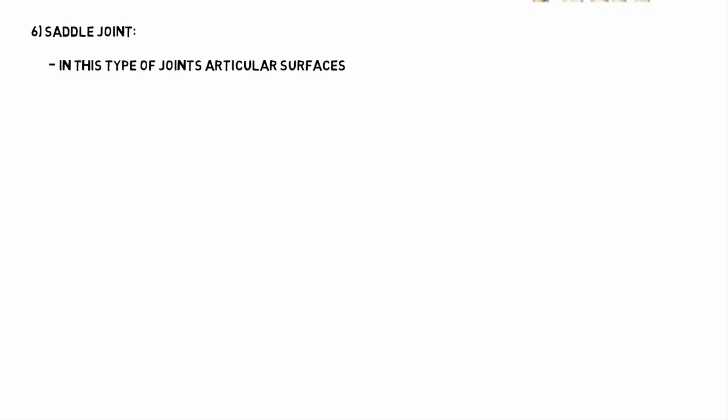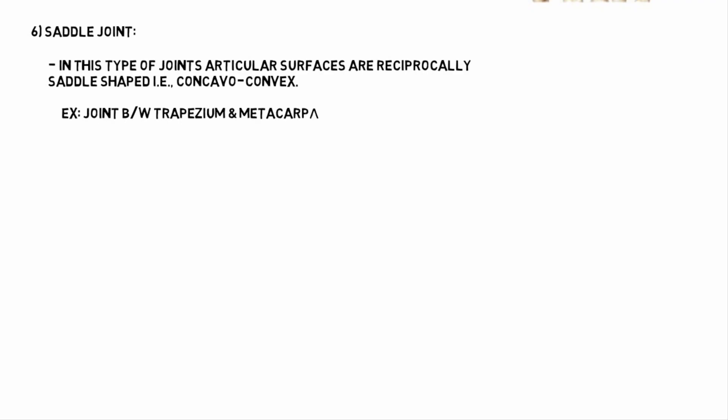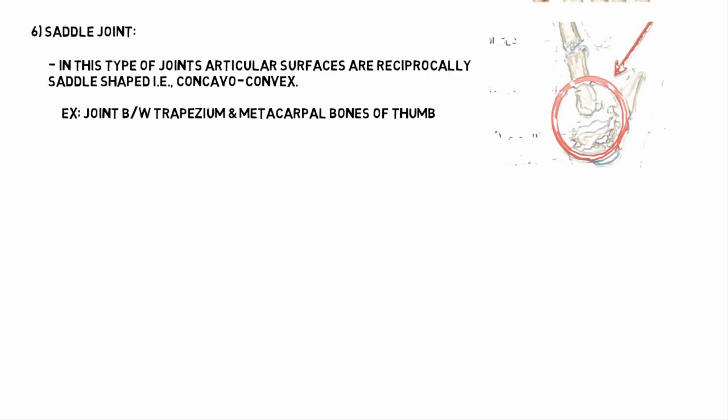The next type of joint is the saddle joint. In this type of joint, the articular surfaces are reciprocally saddle shaped — that is, concave-convex. Examples are the joint between the trapezium and metacarpal bone of the thumb, and the sternoclavicular joint.